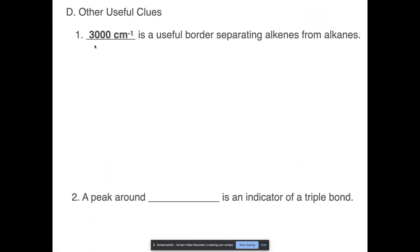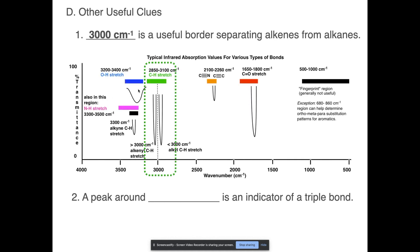So other useful clues around 3000 inverse centimeters. That's a pretty useful border for separating alkenes from alkanes. Let me point that out on this chart that you saw on the very first slide. Right here is 3000 inverse centimeters. You can see that when it says that you are greater than 3000, like right on the verge of 3000 but on the opposite side here, that tends to tell you that you have a double bond somewhere. If instead on the opposite side of 3000, just a little bit before, you see a peak that lets you know most likely that you have an alkane. This is one of those telltale areas you want to look for when you're trying to see does this have a double bond. If it does, it normally will appear in this region over here.